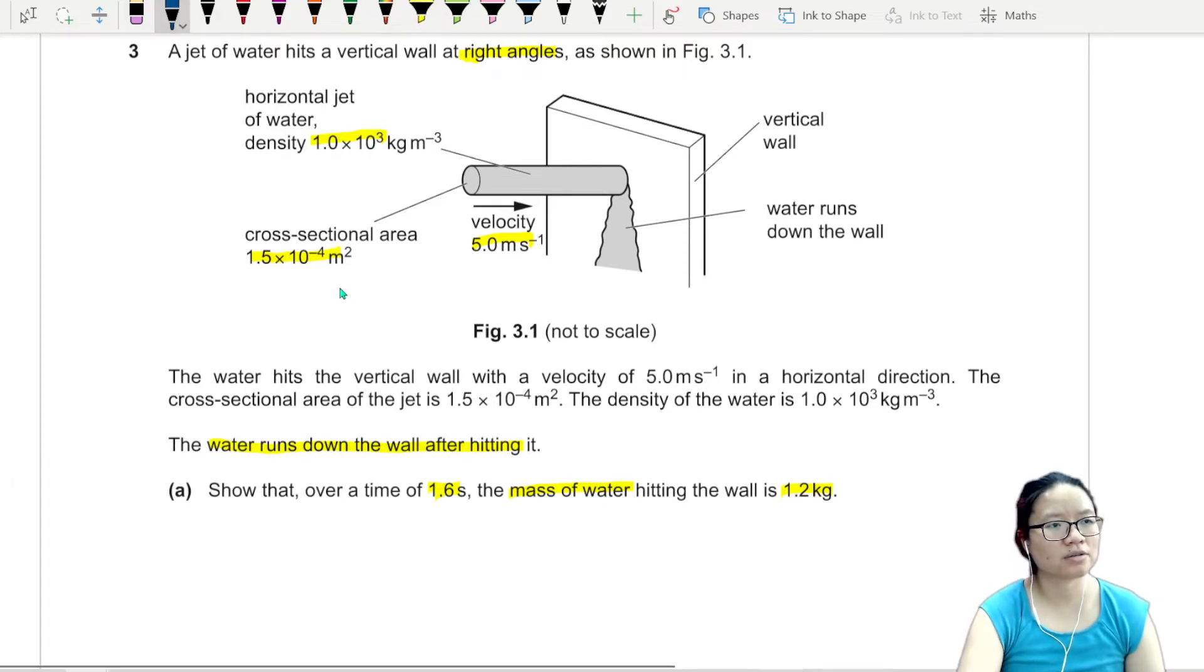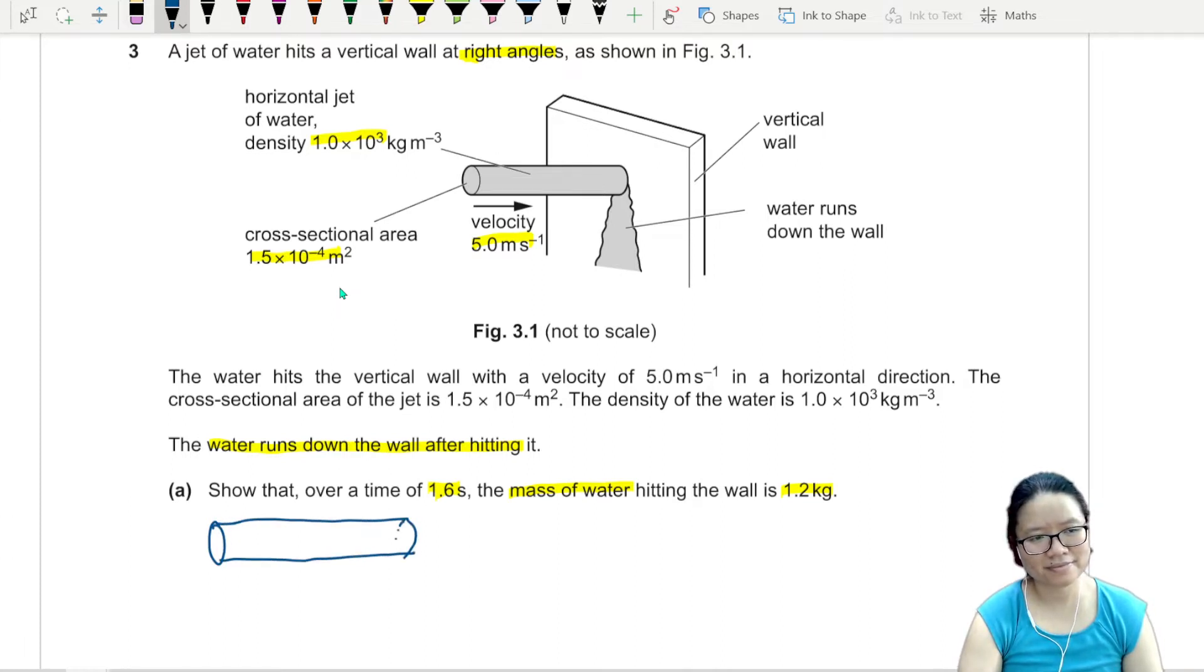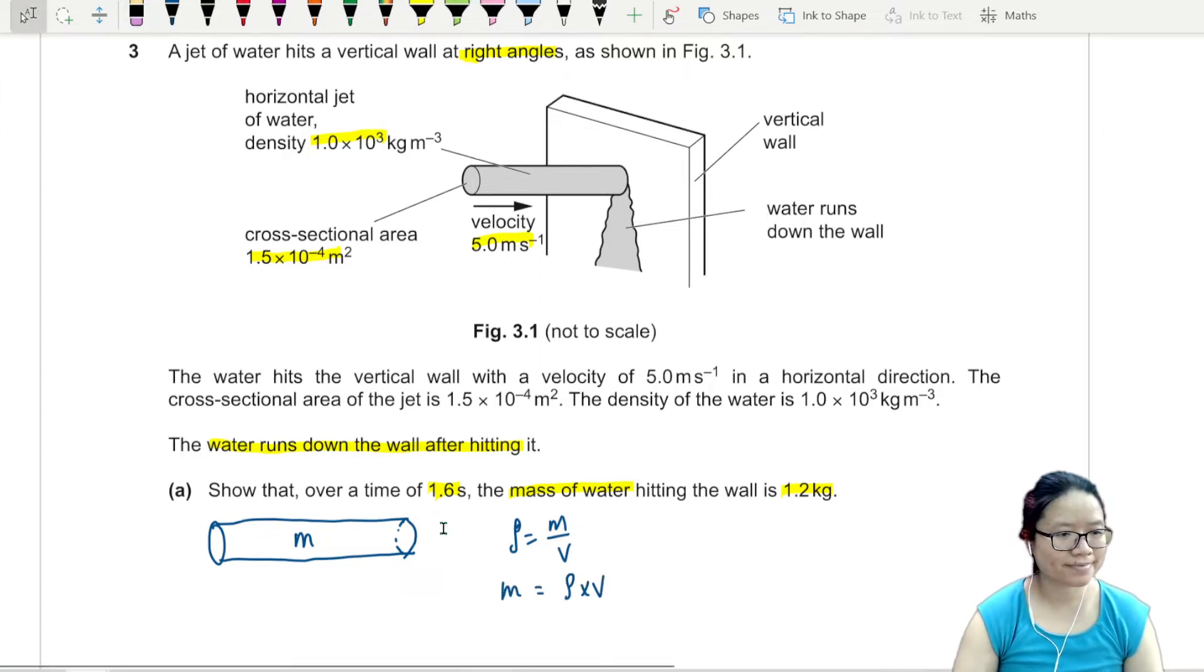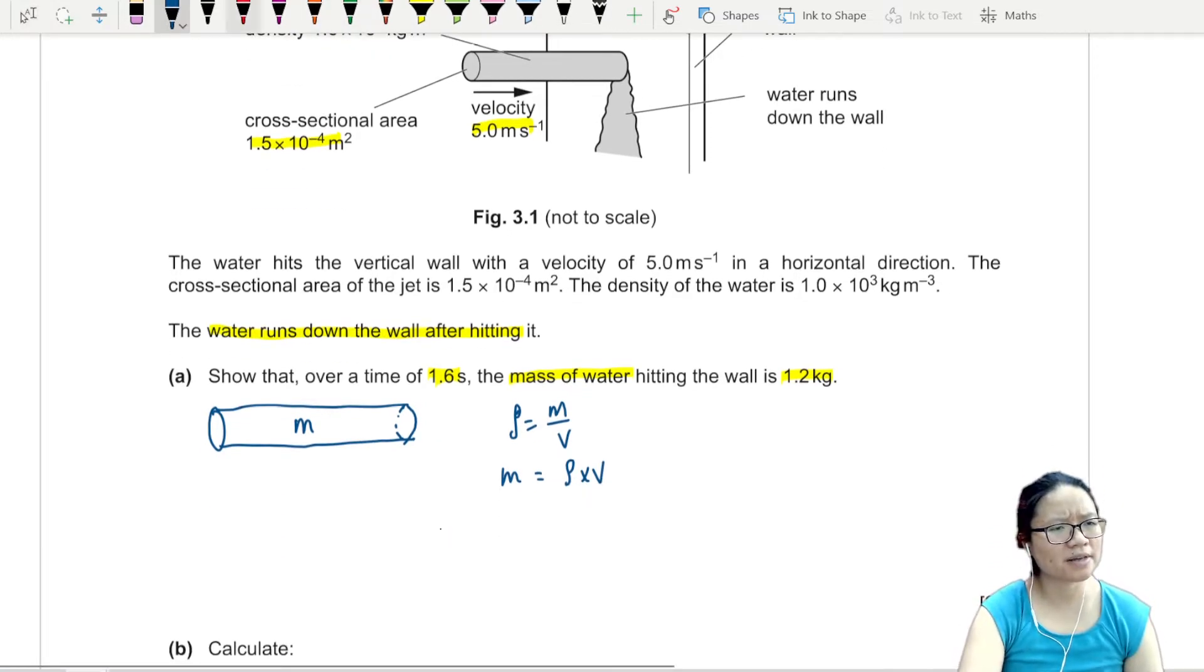You look at how they draw the water. They already draw it so that it looks like a cylinder. So if I want to find mass of this cylinder, I can use density. Density is mass over volume. So to find mass, I will take density times volume. How do we find volume of this thing again? We'll take the cross-sectional area A because I have value for A. A is 1.5 times 10^-4. Multiply by the length L.